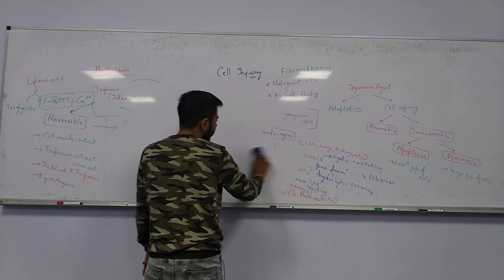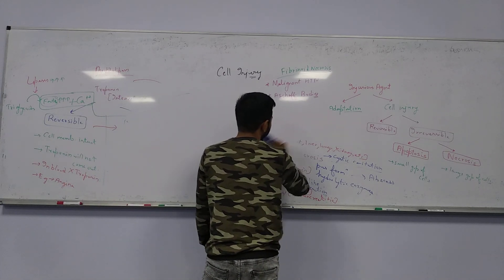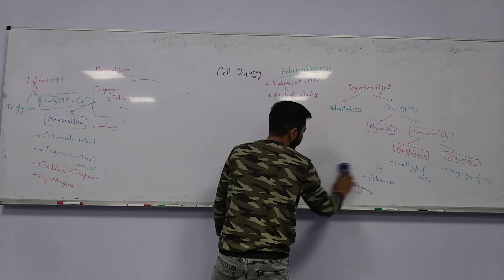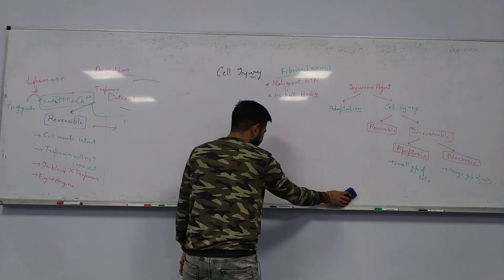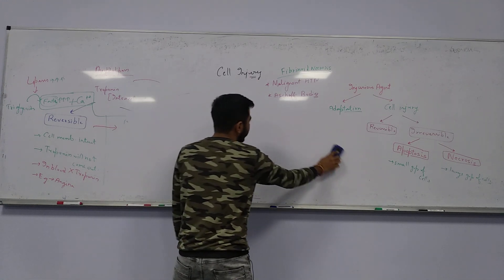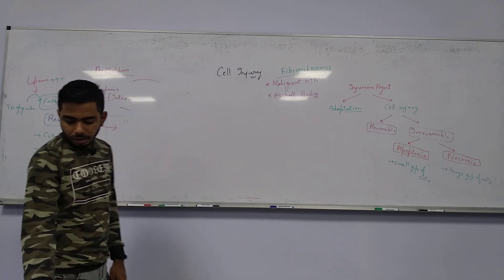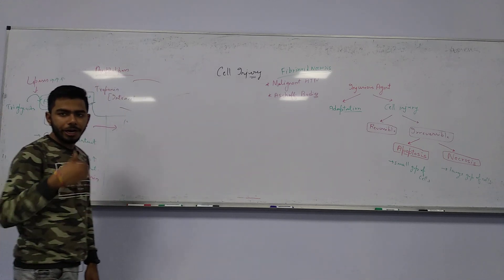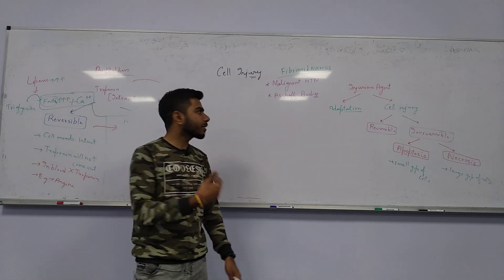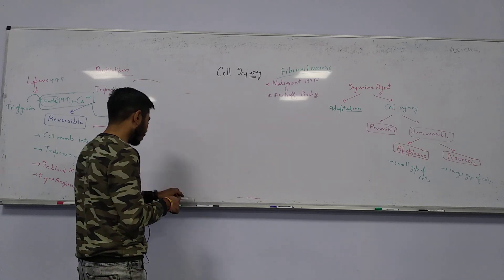Apoptosis affects a small group of cells, whereas necrosis affects a large group of cells. Apoptosis is kind of a suicide of the cell, while necrosis is kind of a murder of the cell. Now we are going to talk about apoptosis.